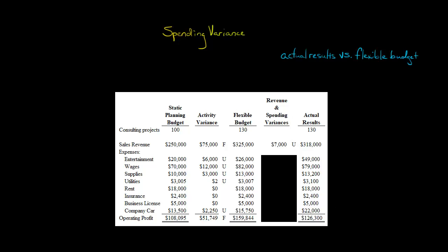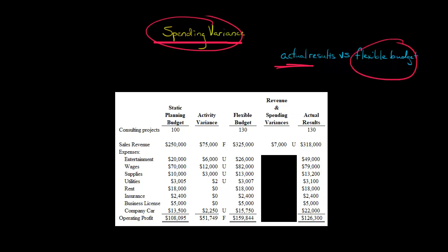In this video, I want to show you an example of how to calculate a spending variance. A spending variance is the difference between the actual amount of an expense and the amount that the expense should have been according to the company's flexible budget.